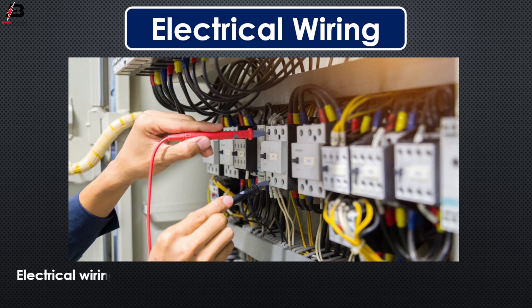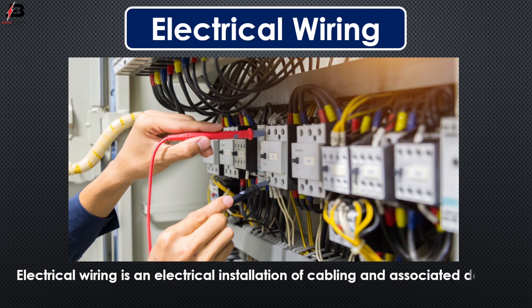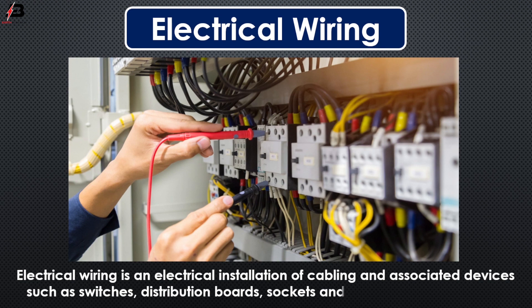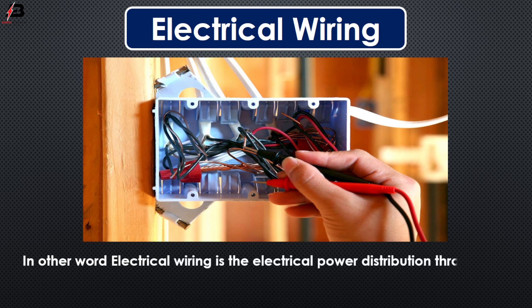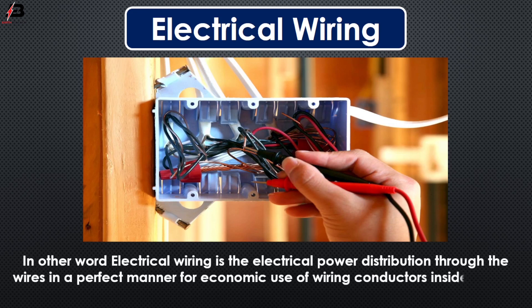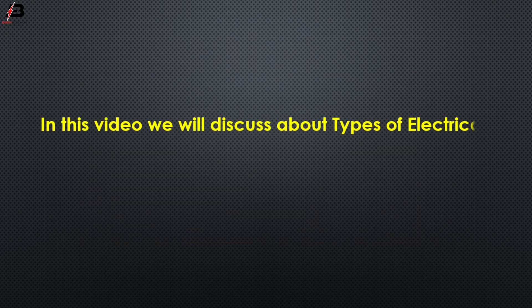Electrical wiring is an electrical installation of cabling and associated devices such as switches, distribution boards, sockets, and light fittings in a structure. In other words, electrical wiring is the electrical power distribution through the wires in a perfect manner for economic use of wiring conductors inside a room or building with better load control. In this video, we will discuss about types of electrical wiring.